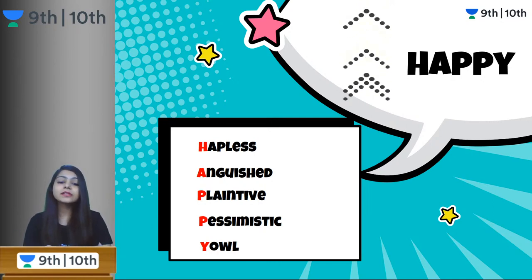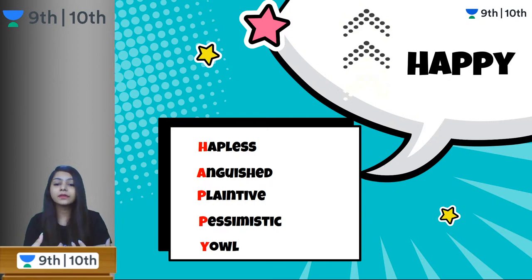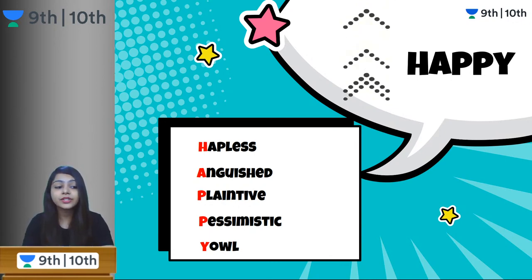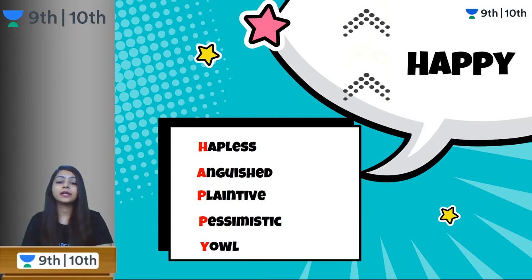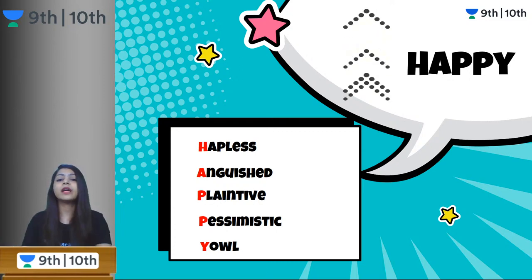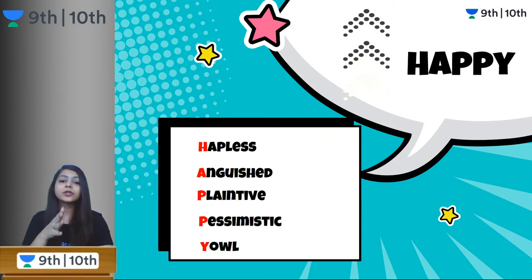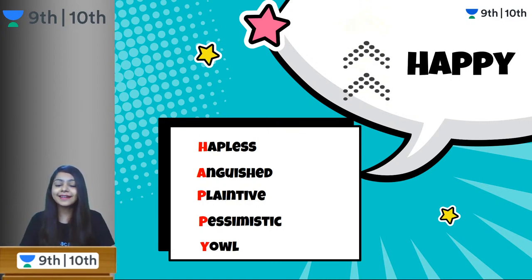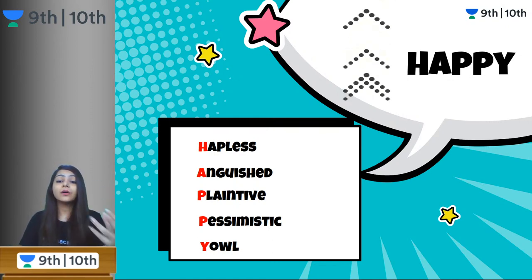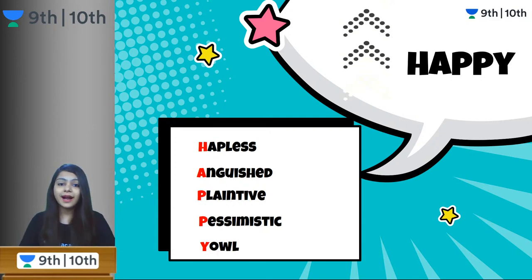Hapless: somebody who is misfortunate might not be happy generally and would not encounter much happiness in life. Anguished: when you are in physical or mental pain, you would not be happy. Plaintive means something very sorrowful — won't give you much happiness. Pessimistic: a pessimistic person is basically a gloomy person who always looks at the negativities and what is wrong around them. And yowl is a painful cry — that sound you make when you are in too much pain.